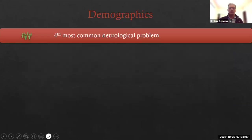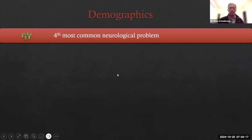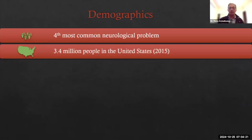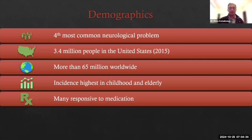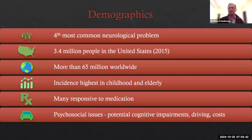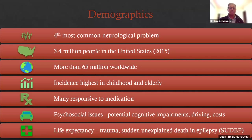As a review of demographics, epilepsy is the fourth most common neurologic problem. 3.4 million people are affected in the United States, 65 million worldwide. The incidence of epilepsy is higher in children and also elderly people, but fortunately most of them are responsive to medication. Epilepsy and seizure are associated with different psychosocial issues, many cognitive impairments, driving issues, and costs. Life experiences are also affected because of trauma or sudden unexplained death in epilepsy.